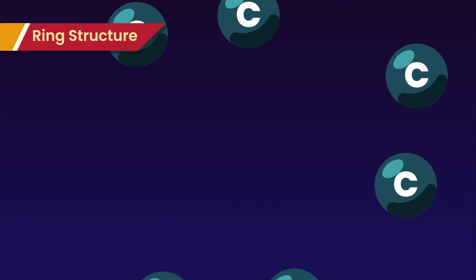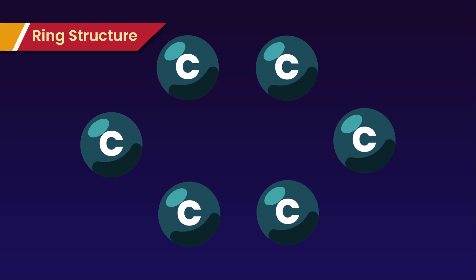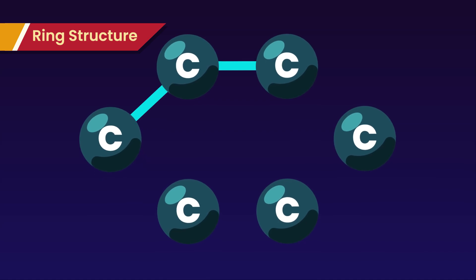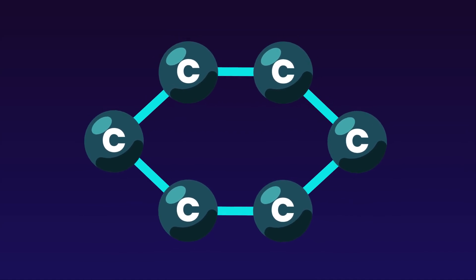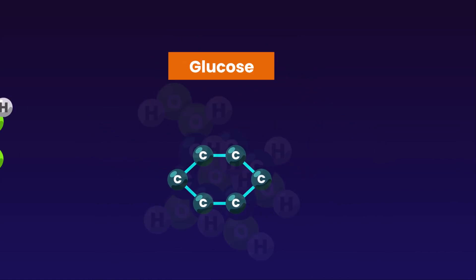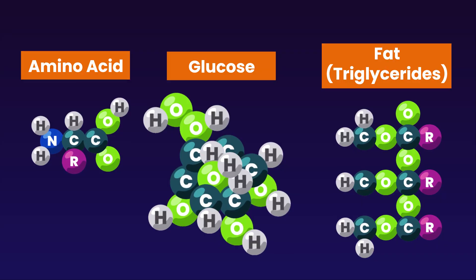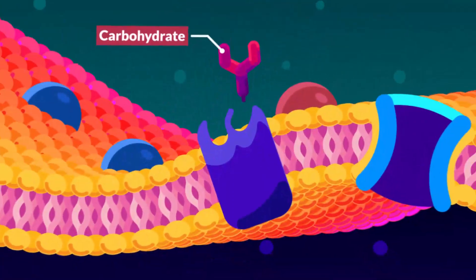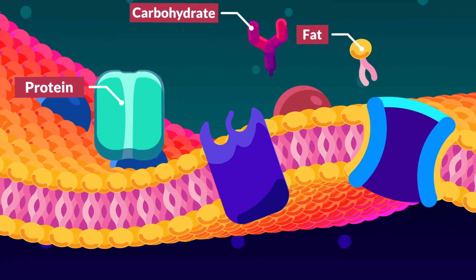Among these elements, carbon is essential in molecular structure due to its ability to form long chain or ring structures. Smaller molecules serve as the building blocks for macromolecules like carbohydrates, proteins, and fats.